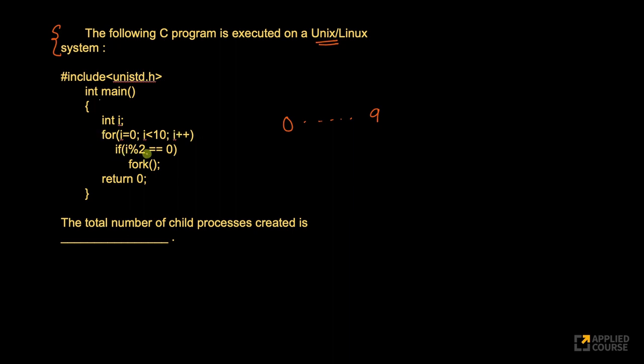If i modulo 2 equals to 0, which means for all even numbers, what all even numbers we have? 0, 2, 4, 6, and 8. Only when i equals to these values, I'll execute my fork. So, how many times has the fork been called?